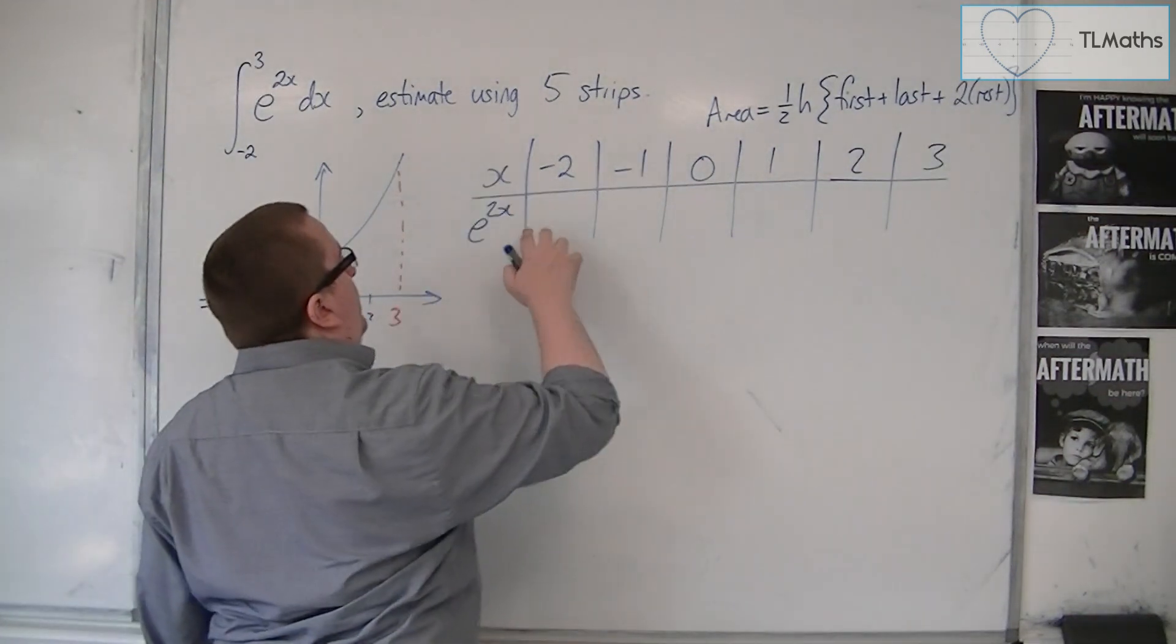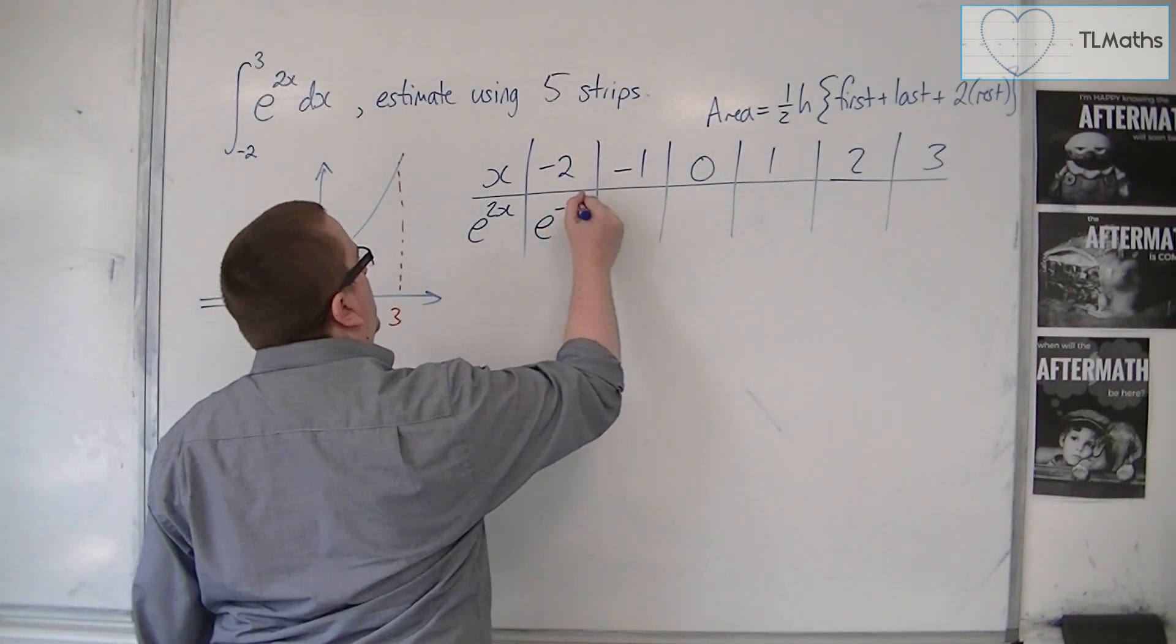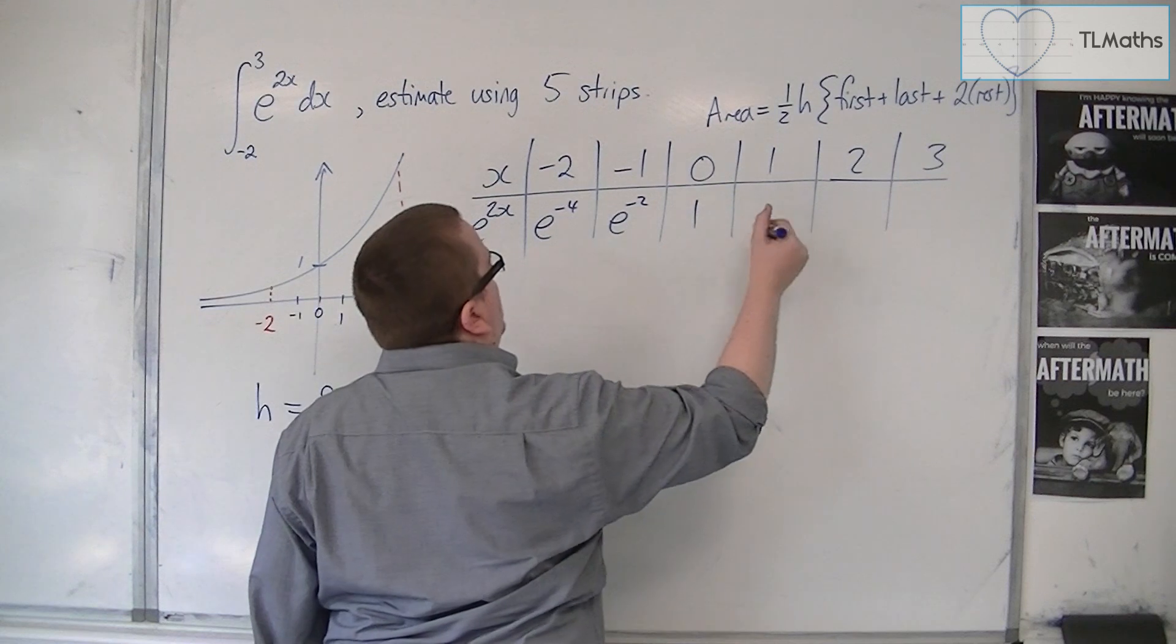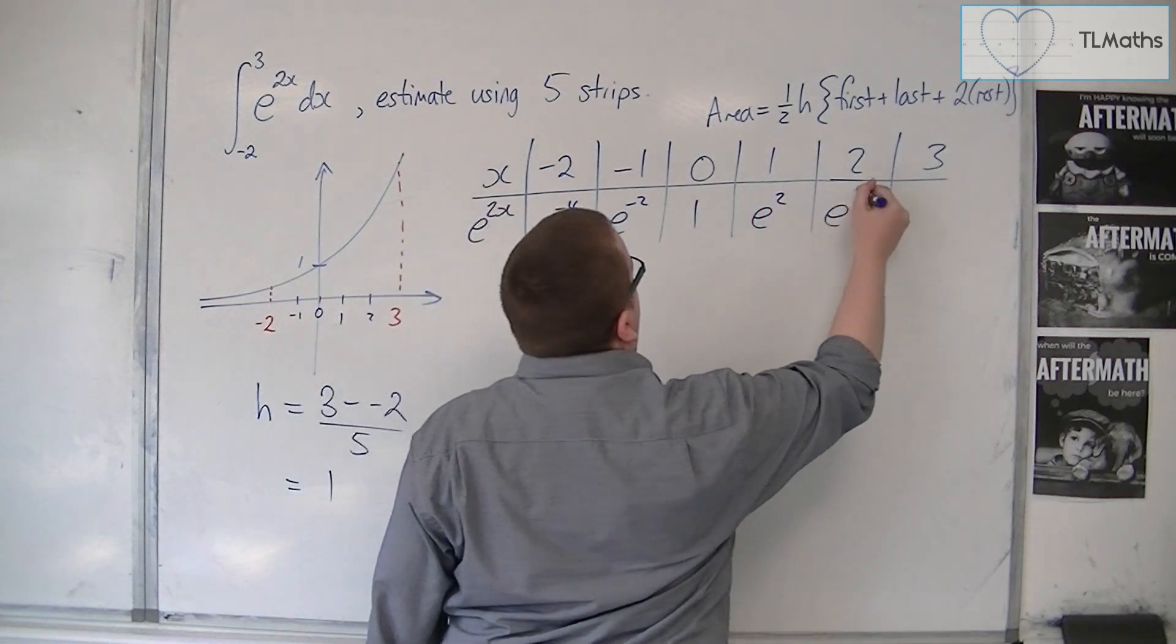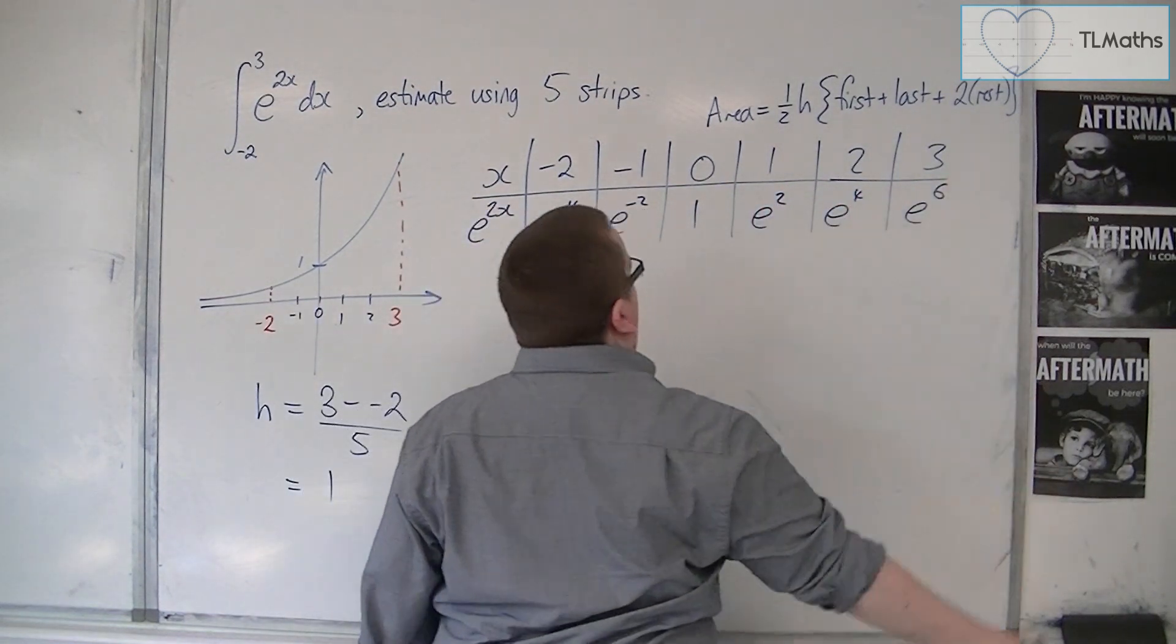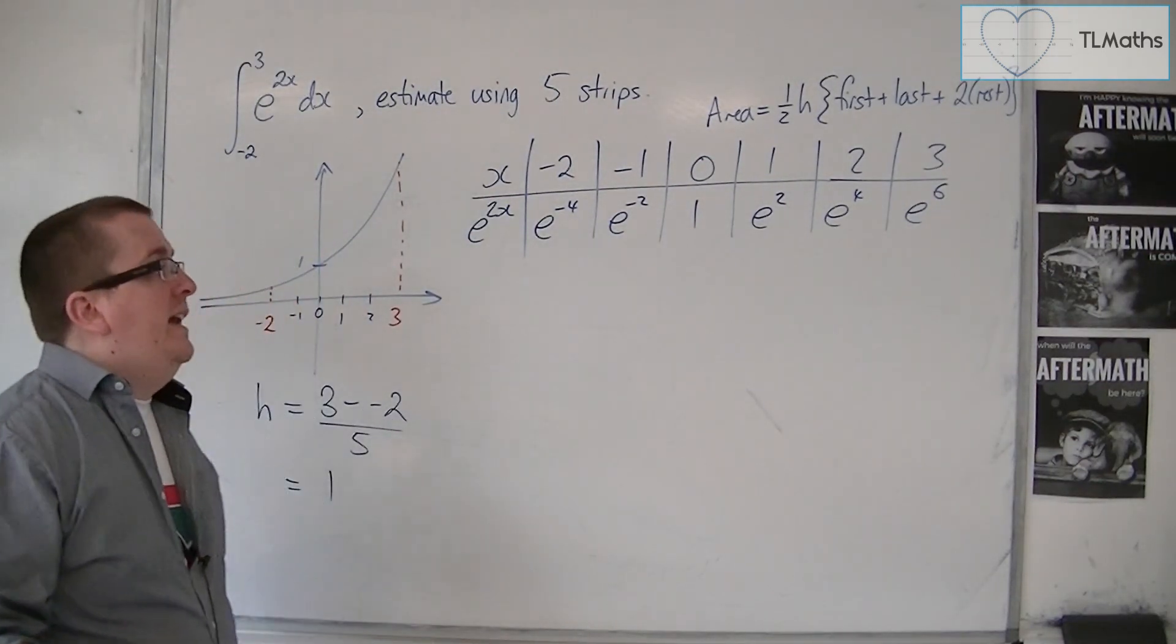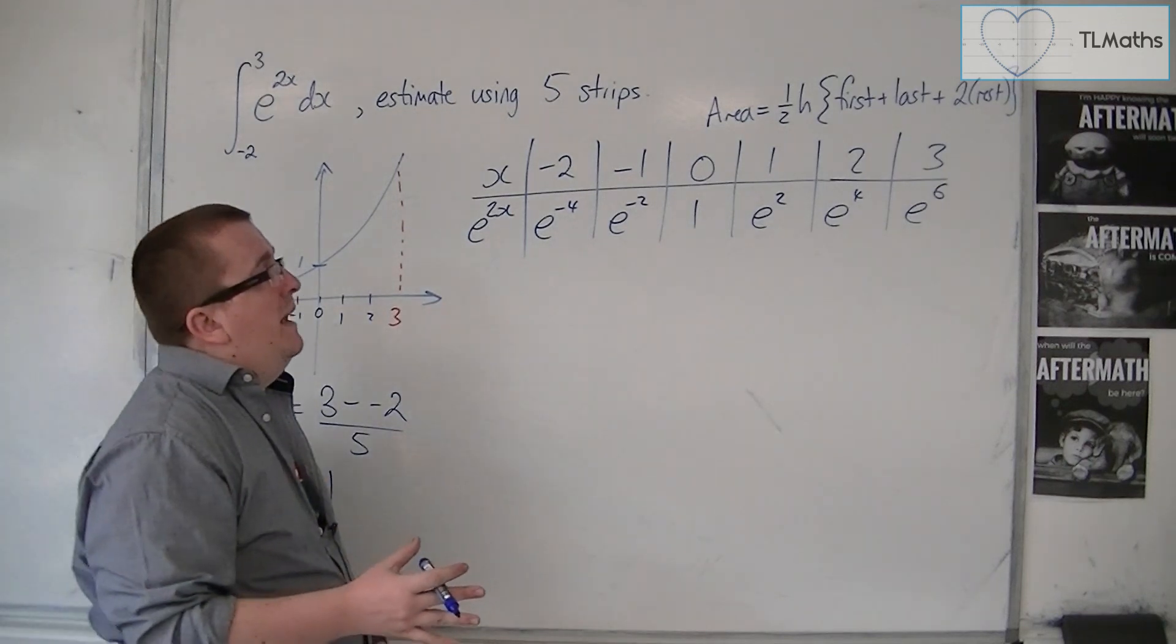You've got the y ordinates. So that would be e to the minus 4, e to the minus 2, e to the 0 is just 1, then you've got e to the 2, e to the 4 and e to the 6. Now I wouldn't write those out in decimal form at this stage. It's going to be too messy.